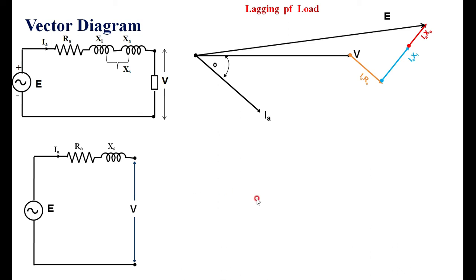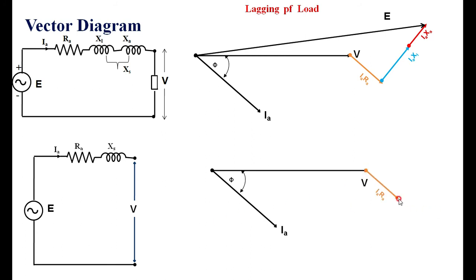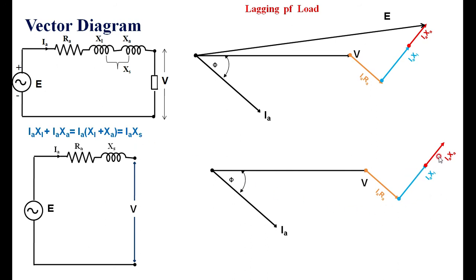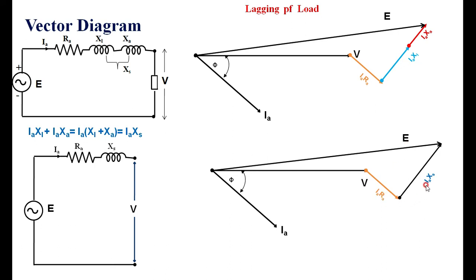The same procedure is shown directly: V is taken as a reference; I is lagging since we are taking lagging power factor. Add IARa which is parallel to I, then add IAXl and IAXa — or directly add IAXs, since Xl plus Xa equals Xs. So IaXl plus IaXa is nothing but Ia times (Xl + Xa) = IaXs. The vector sum of IARa and IAXs gives IaZs, which is the impedance drop of the alternator. This is how to draw the vector diagram.